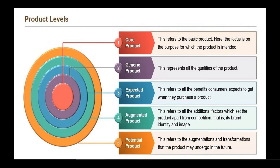The second level is called the generic level — the generic benefits you get out of a product. Generic benefit refers to the qualities and features of the product. In the case of a hotel room, you will be getting a bed, towels, a television, and Wi-Fi facility. All this refers to generic benefits or the generic level of the product, which provides you benefits above the functionality level.